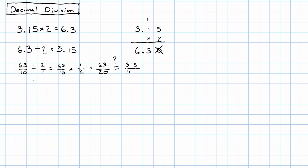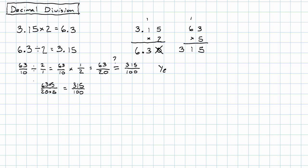That's going to be 63 twentieths, and then the denominator will be 100. If I take 63 twentieths and multiply the numerator and denominator each by 5, I'll get 100 for the denominator. Let's see, 63 times 5 gives us 315 hundredths. But there's no obvious way to come up with 315 hundredths if I didn't already know about it.